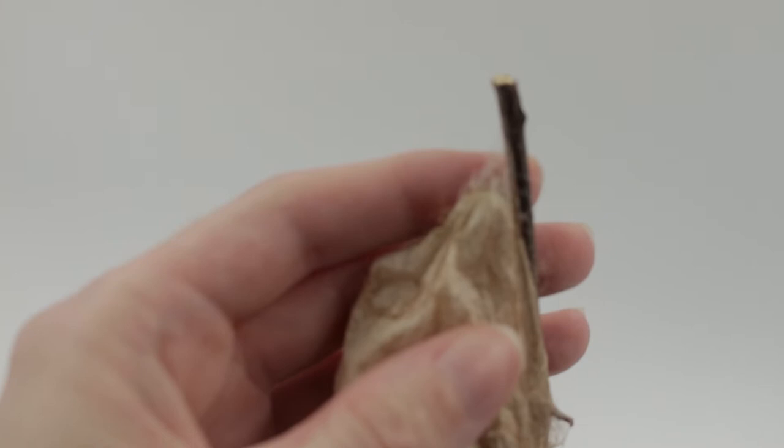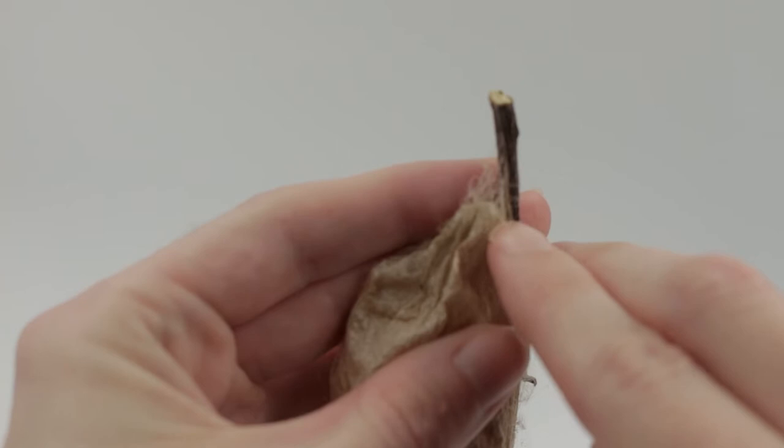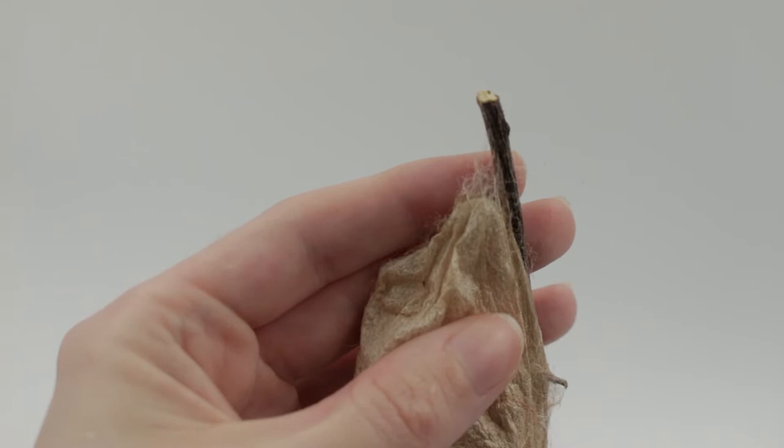The bottom of the cocoon looks more like this. It's got basically a little blunt end. You can see here that it's a rounded little end, and there's really no place from which the moth can escape.